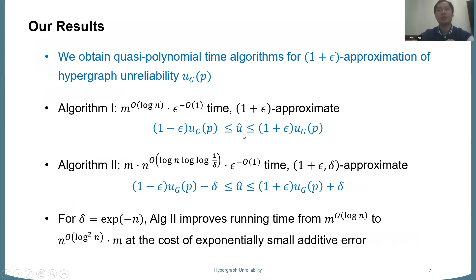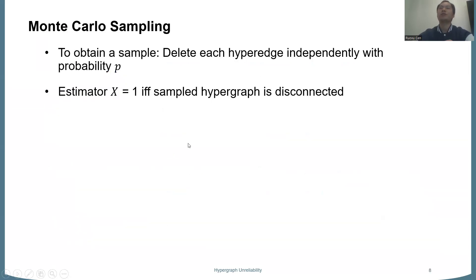And this delta is some parameter we can choose in the algorithm. Typically, we can imagine delta to be some exponentially small additive error. In this case, option two will run in something like n^{log^2 n} times m. So this running time is faster and at the cost of exponentially small additive error. And our first algorithm is actually quite simple. So this talk, I will introduce it in detail. And for algorithm two, I will only introduce the high-level idea. Okay, let's get into the algorithms.